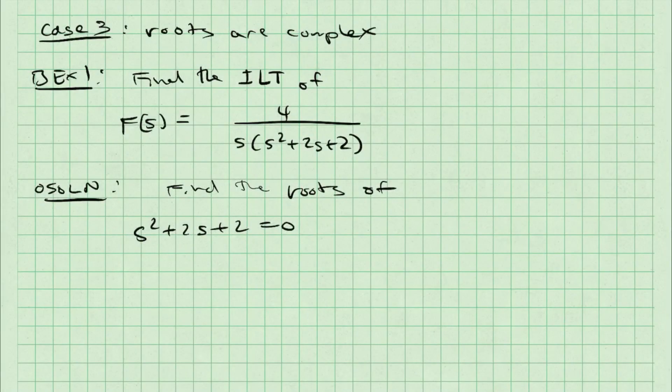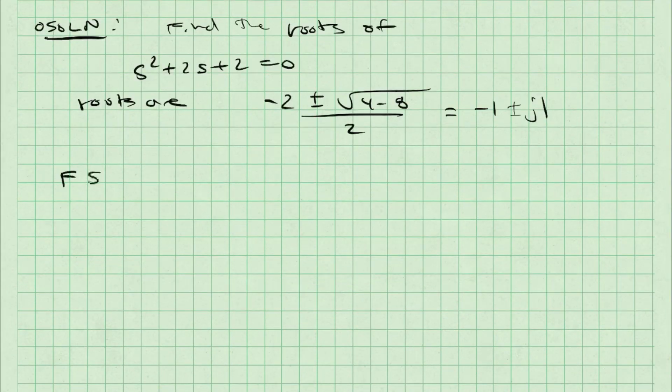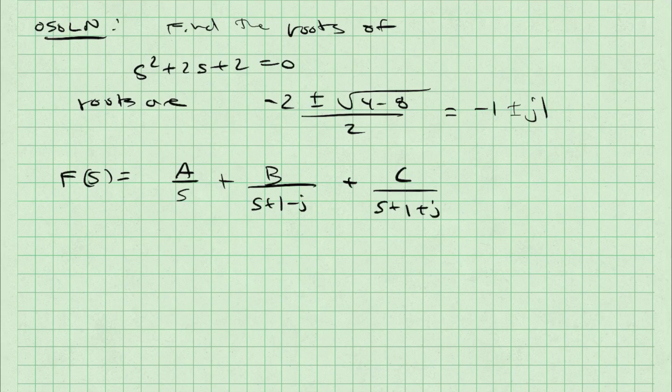These roots found with a quadratic equation are minus 1 plus or minus j1. Using partial fraction expansion, f of s can be decomposed into a over s plus b over s plus 1 minus j plus c over s plus 1 plus j.